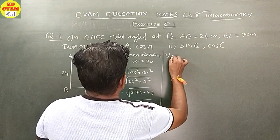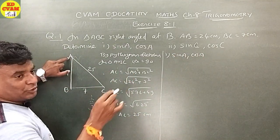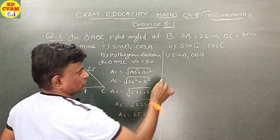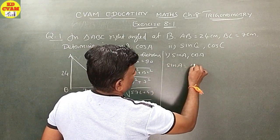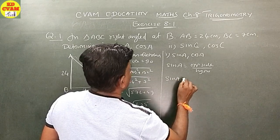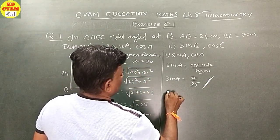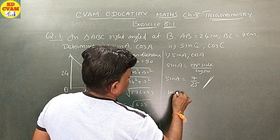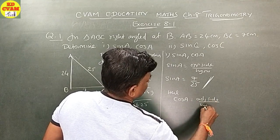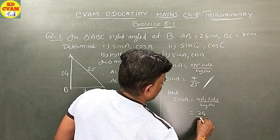Number 1: sin A. Sin A is equal to opposite side upon hypotenuse. Sin A is equal to 7 upon 25. Cos A is equal to adjacent side upon hypotenuse. Adjacent side is 24. So cos A equals 24 upon 25.